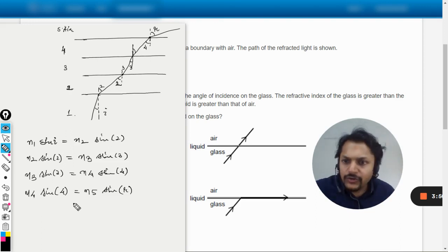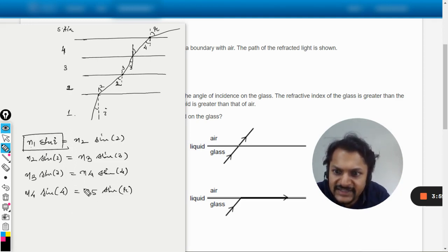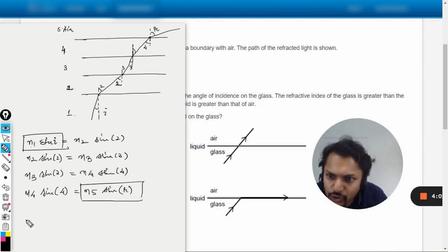Now you can see that all these things are actually equal, isn't it? Like n1 sine i is equal to this, this is equal to this, this is equal to this. So eventually we find that this is equal to this. So overall n1 sine i equals n5 sine r.